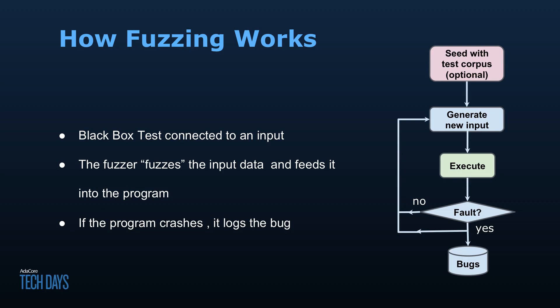Going a bit more in depth about what a fuzzer does: it's a black box test connected to an input. The fuzzer generates new inputs via randomization, mutation, or data malformation — the specifics depend on the library chosen. It takes a seed or generates its own, feeds that input into your program, and looks to see if your program crashes. If it does, it logs the bug, and either way it keeps going.